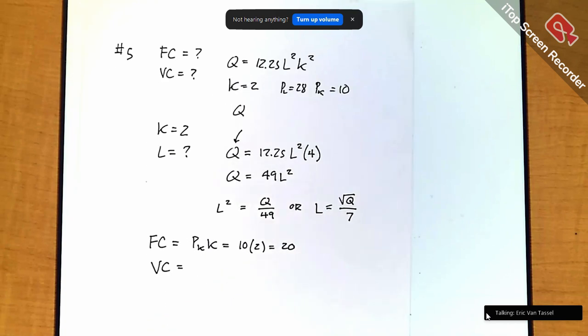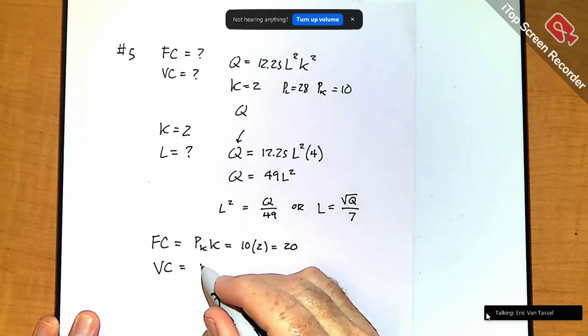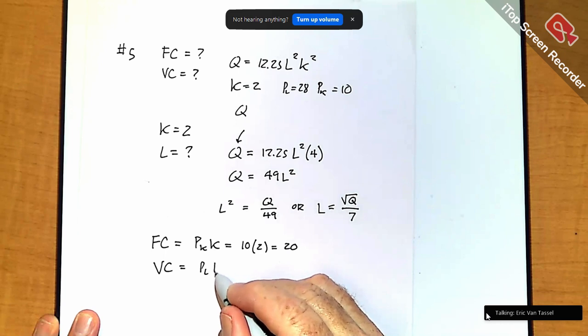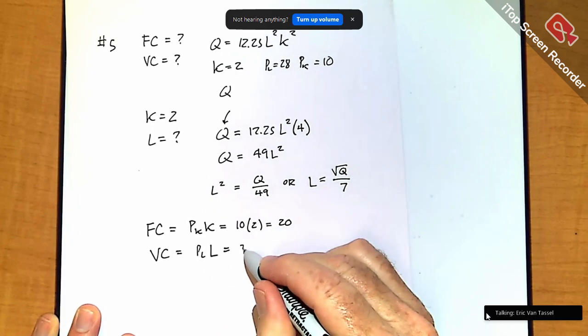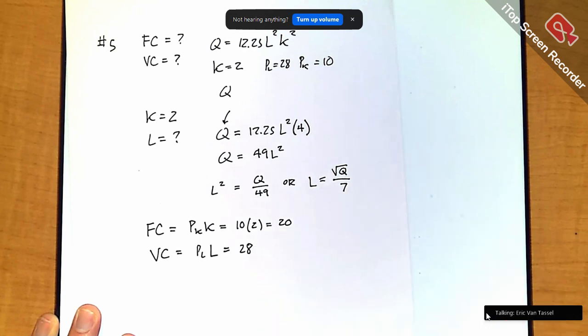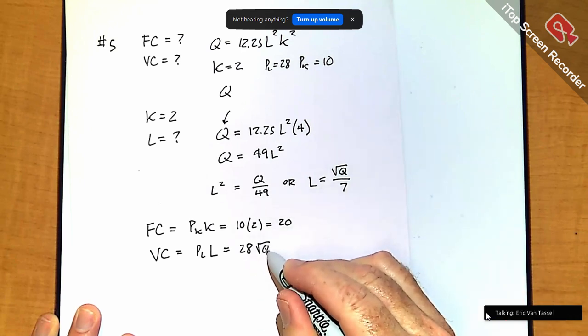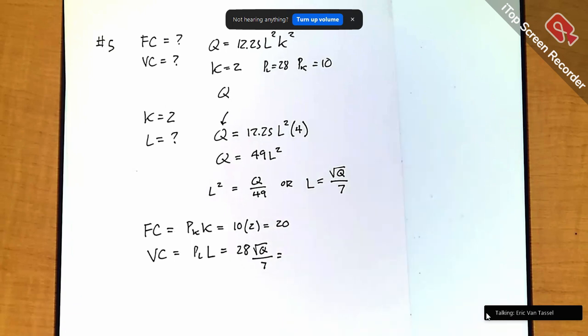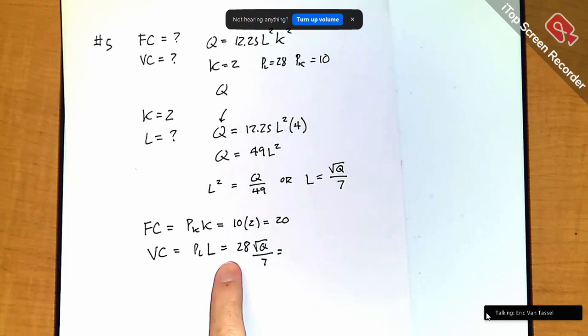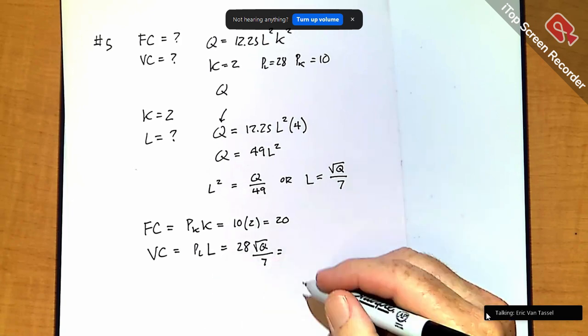Variable cost is just the other part of the total cost. So, in this case, the cost of the labor. So, that would be P_L times the L choice. And P_L is 28. And the L choice is the square root of Q over 7, right? Yeah. 7 goes into 28, what is that, 4 times?